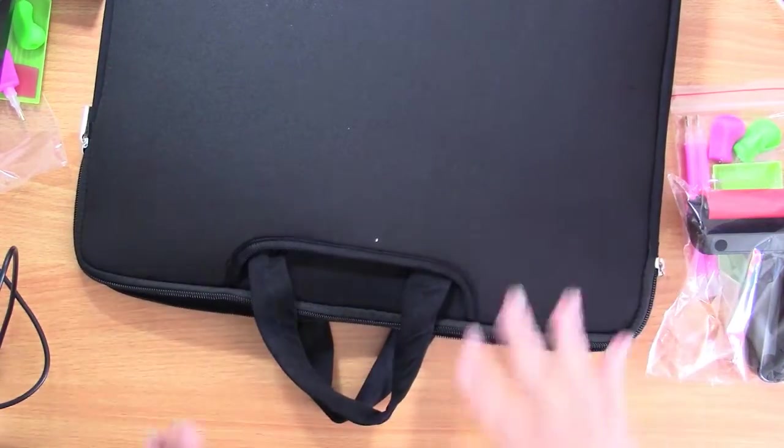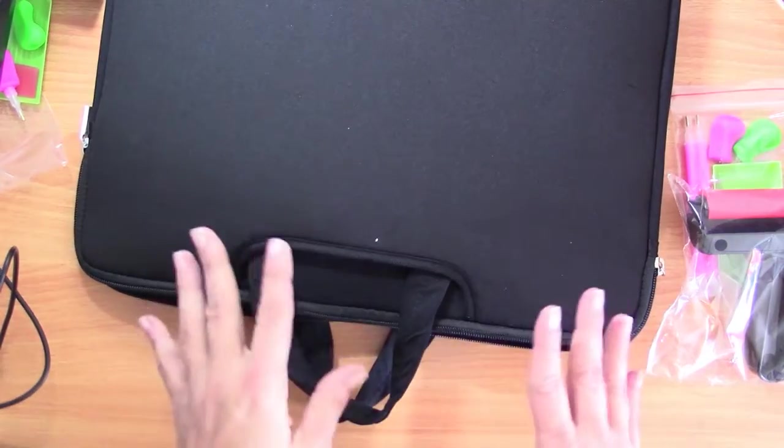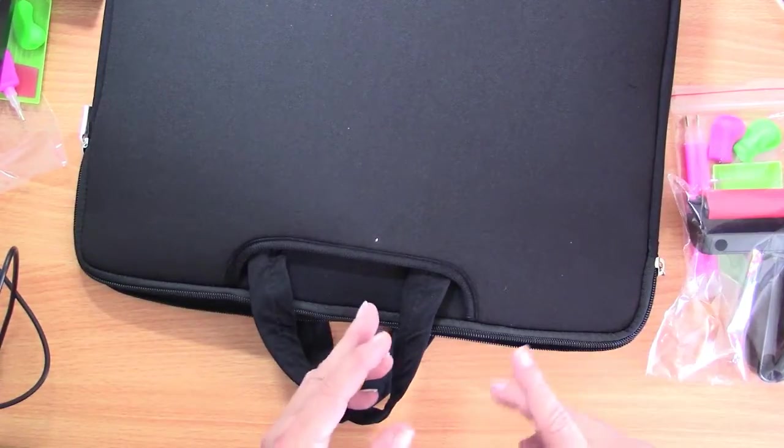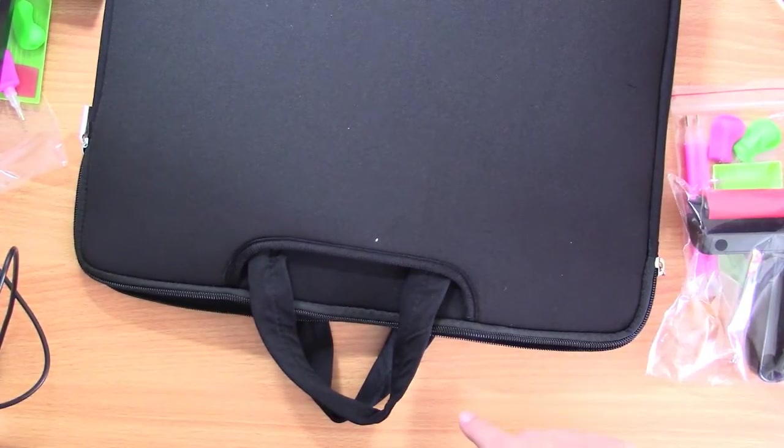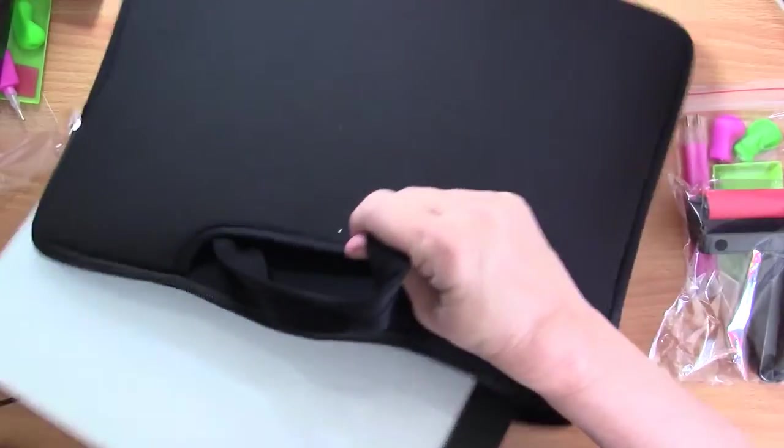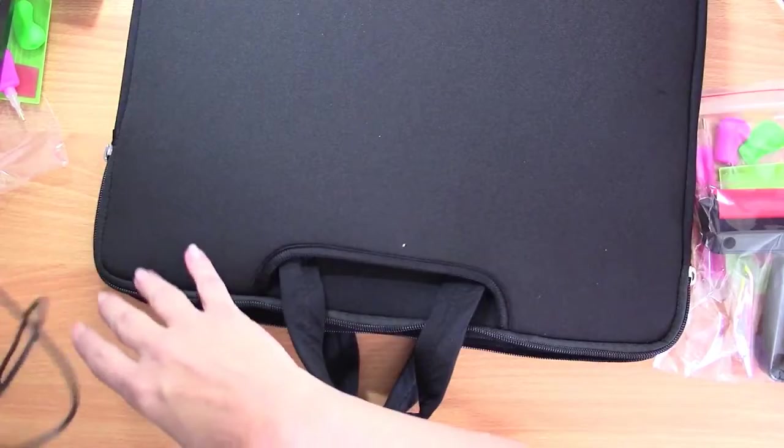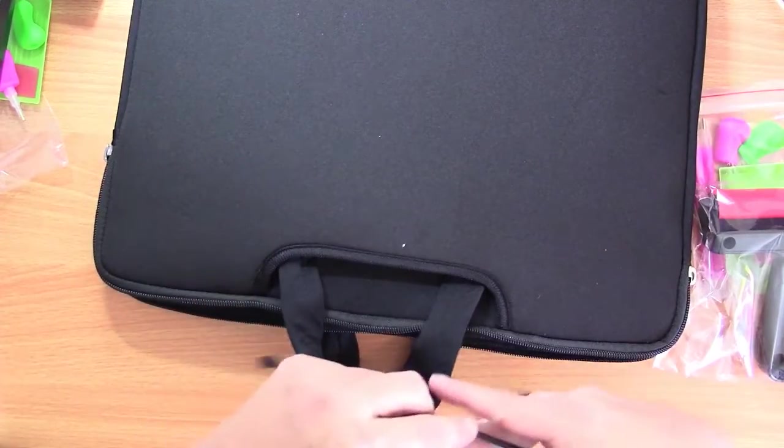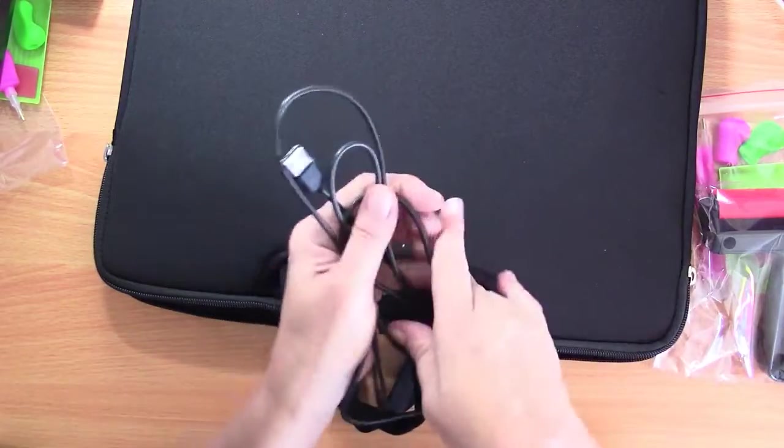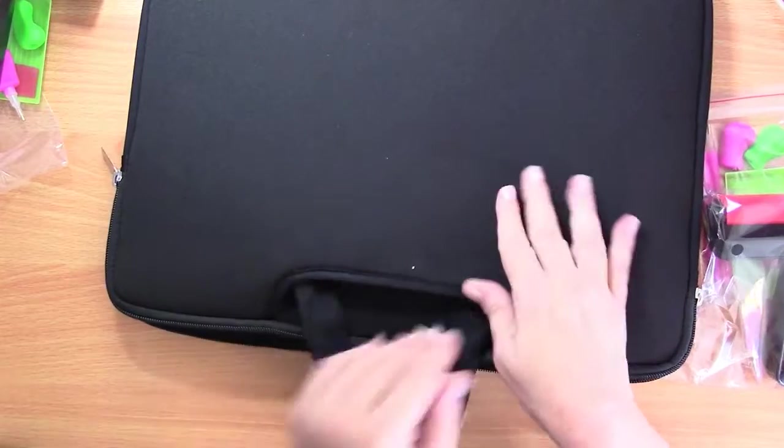Now let's see how we can get all of our supplies in here, or at least everything except, it depends on how big the diamond painting is, but everything except the diamond painting. So we have our light pad. Let's stick it in there. This light pad does not come with the case. Then we have our cord. Stick it down in there.